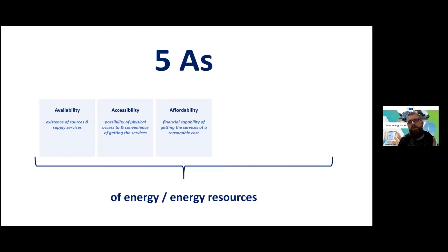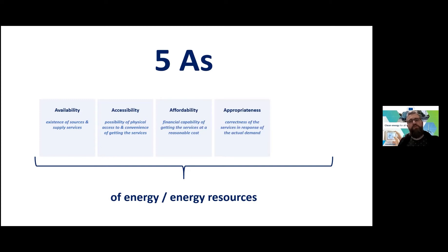There were times in legal theory and energy policy theory when there were only three A's, and later they developed to five A's. What was added: appropriateness — the correctness of the service in response to actual demand. In other words, as a customer, I want to get energy to the extent I need, to the extent it better reflects my actual demand.